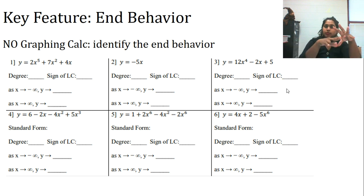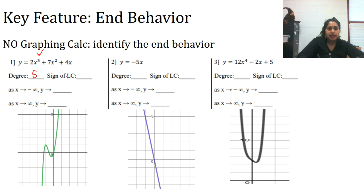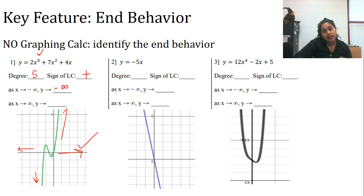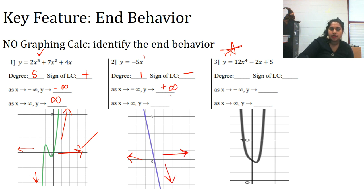I've set this up — you can pause and copy it down. My highest degree is 5, leading coefficient is positive. Odd and positive means the graph starts from down and goes to up. As x goes to negative infinity, y also goes to negative infinity. As x goes to positive infinity, y goes to positive infinity. For the linear example: degree 1, sign negative, so it's a decreasing linear. As x → -∞, y → +∞, and as x → +∞, y → -∞.